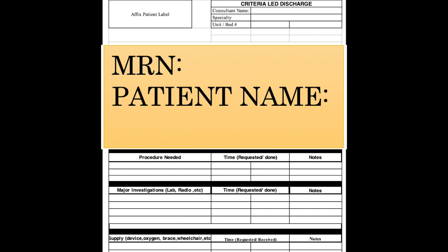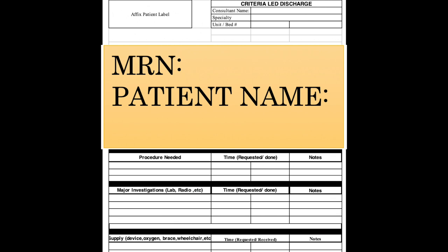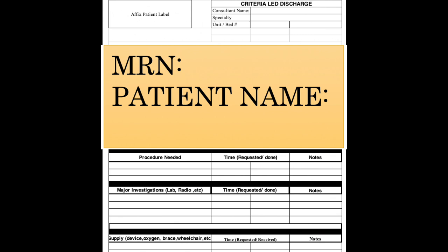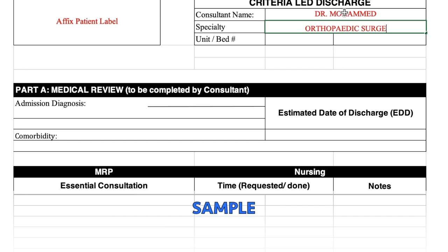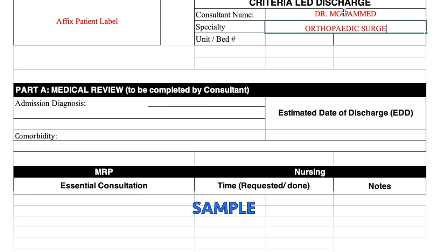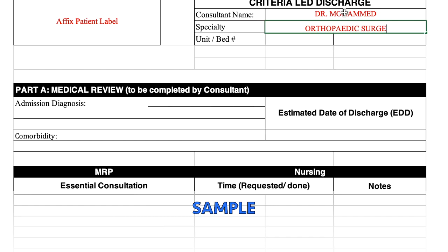In the upper left corner, the patient identification should be indicated, signifying the patient's name and medical record number. Meanwhile, in the upper right corner, the Criteria Lead Discharge or CLD column is seen. The consultant's name, his or her specialty, patient's unit, and bed number should be filled out.